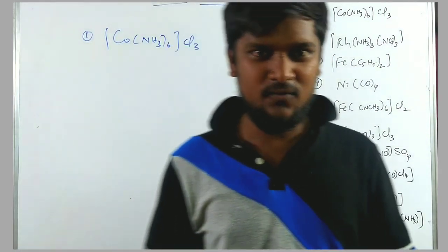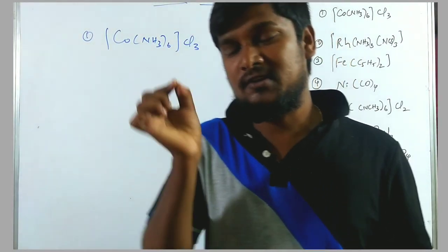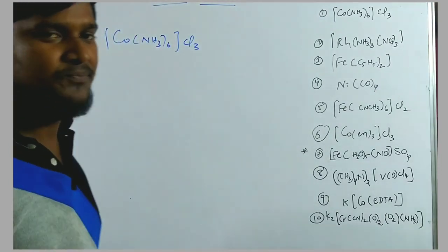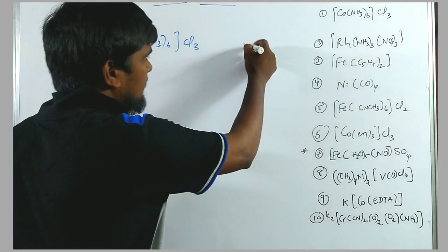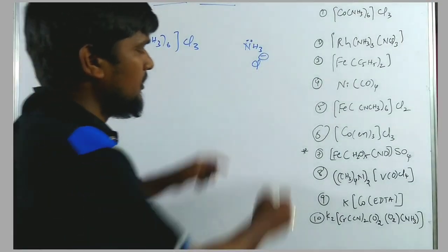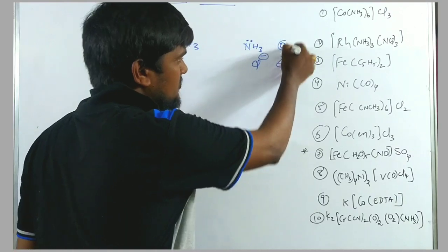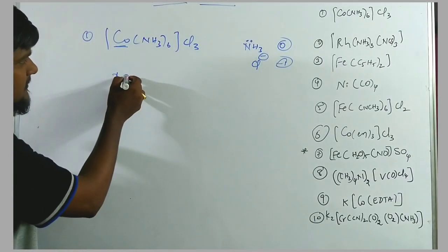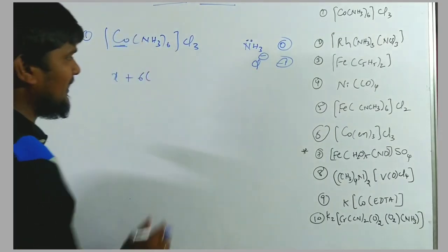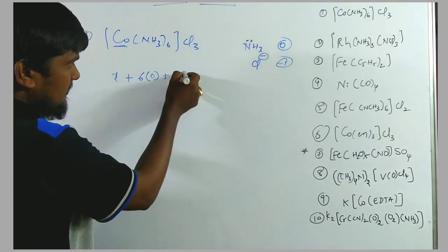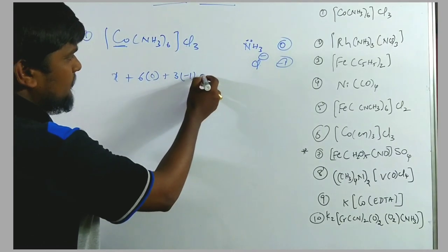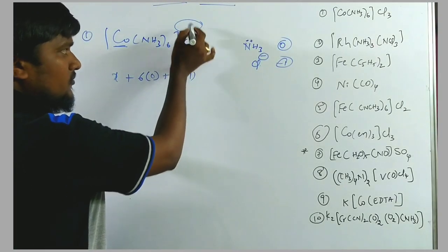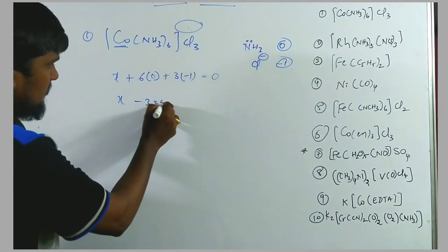Before going into the oxidation state, we need to know the charge of the ligand. NH₃ belongs to neutral dentate ligand — it has a lone pair of electrons but zero charge. Chlorine has a negative one charge. So: X + 6(0) + 3(−1) = 0, giving X − 3 = 0, therefore X = +3. This is the calculation of oxidation state for the first compound.